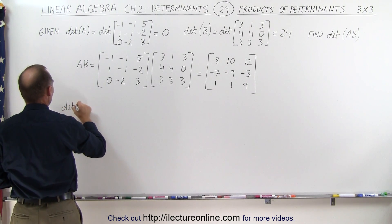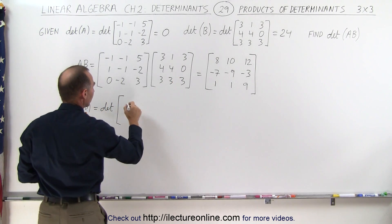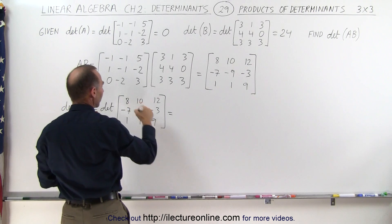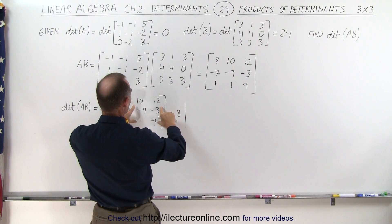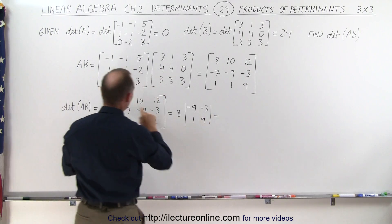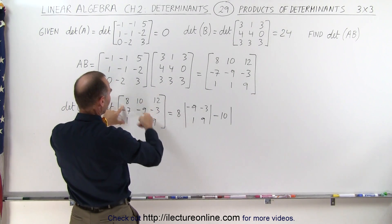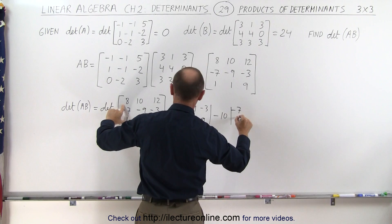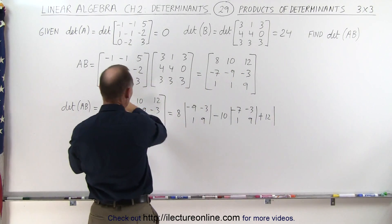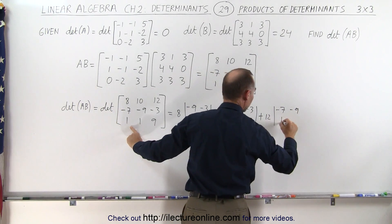So we're going to take the determinant of A times B, which is equal to the determinant of the product matrix — 8, minus 10, 12, minus 7, minus 9, minus 3, 1, 1, 9. Taking the first element 8 times the minor determinant — minus 9, minus 3, 1, 9 — minus the second element 10 times the determinant of minus 7, 1, minus 3, 9, and finally plus 12 times the determinant of minus 7, minus 9, 1, 1.